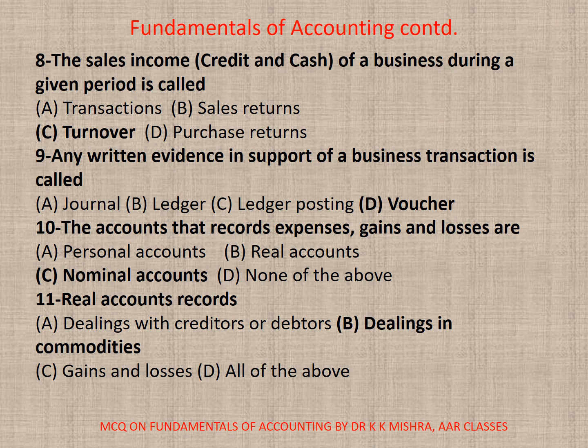Question 11: Real Accounts records A. Dealings with Creditors or Debtors, B. Dealings in Commodities, C. Gains and Losses, D. All of the above. Correct option is B. Dealings in Commodities.